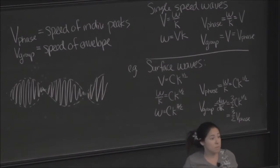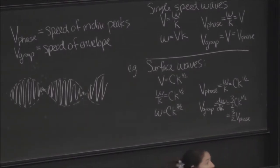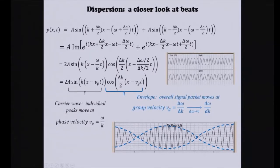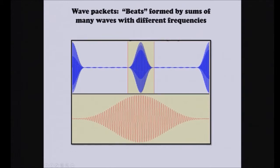So here, in the one we did yesterday, you can see an example that the envelope is moving at a different speed than the carrier wave itself. So what does that look like?